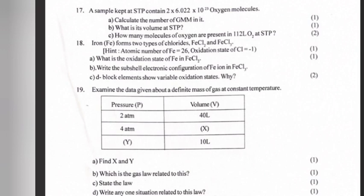19. Examine the data given about a definite mass of gas at constant temperature. Pressure (P), Volume (V): 2 atm 40 liter, 4 atm X, Y 10 liter. a) Find X and Y. b) Which is the gas law related to this? c) State this law. d) Write any one situation related to this law.